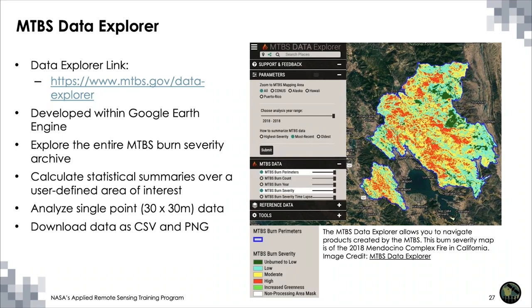This screenshot shows the 2018 Ceno Complex Fire in California within the MTBS Data Explorer.